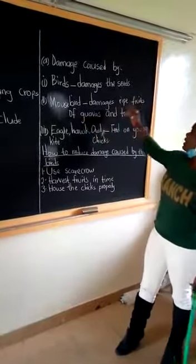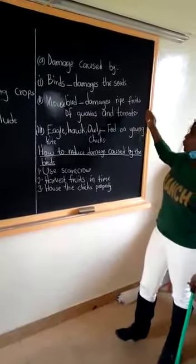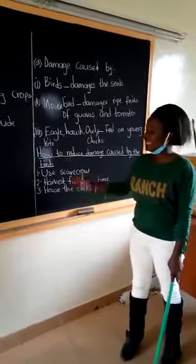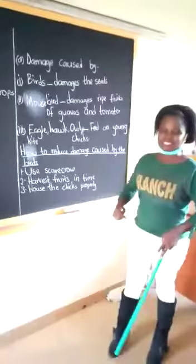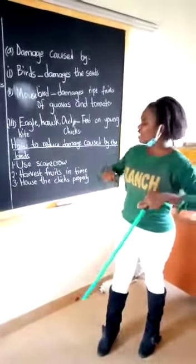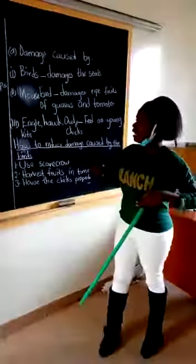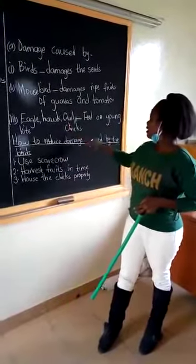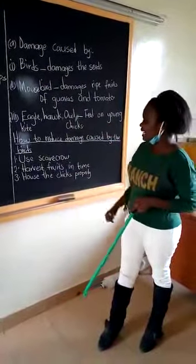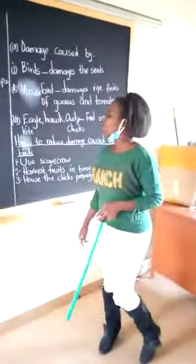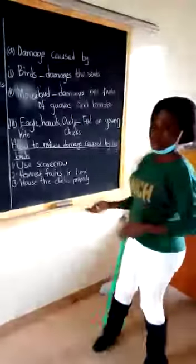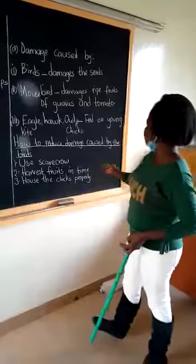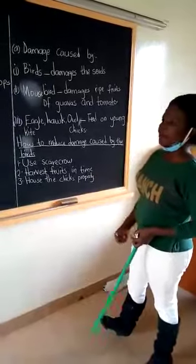Mousebird damages the ripe fruits of guavas and tomatoes. Eagle — I hope all of you know eagle — they always snatch our chicks. Hawk and owl, these ones feed on young chicks. Now, let's look at what we are supposed to do to reduce the damage caused by the birds.